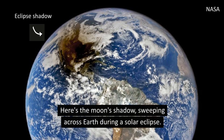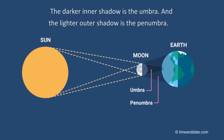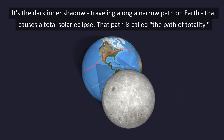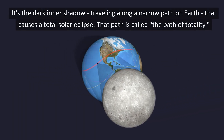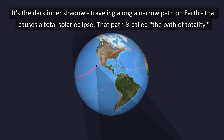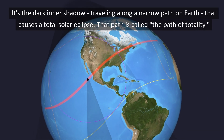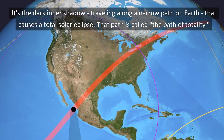Here's the moon's shadow sweeping across Earth during a solar eclipse. The darker inner shadow is the umbra and the lighter outer shadow is the penumbra. It's the dark inner shadow traveling along a narrow path on Earth that causes a total solar eclipse. That path is called the path of totality.